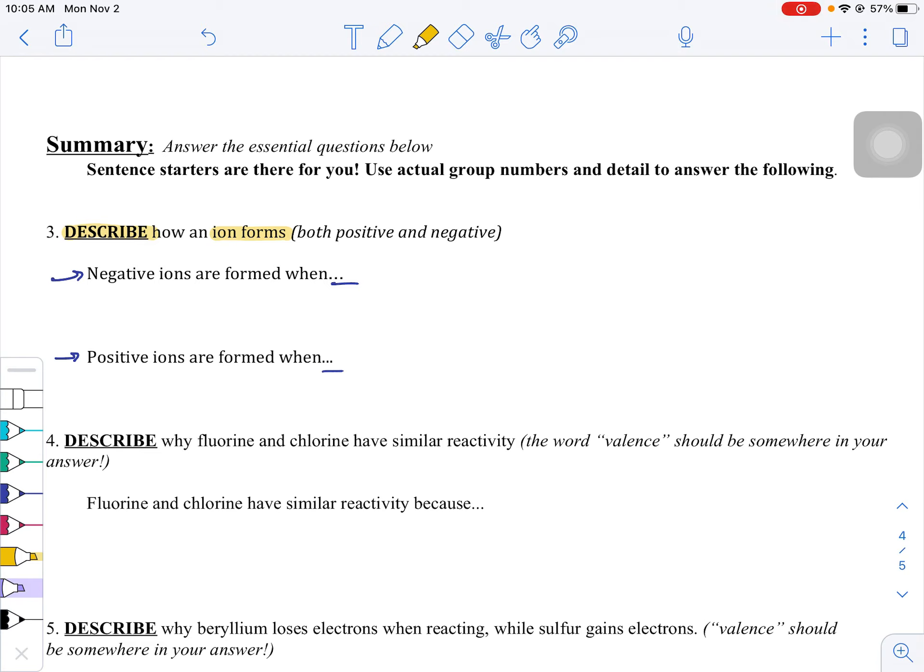We have a spot for describing how a positive ion forms and how a negative ion forms. So let me remind you that an ion is when an atom gains or loses electrons. So you want to make sure that you're indicating which ion is which.